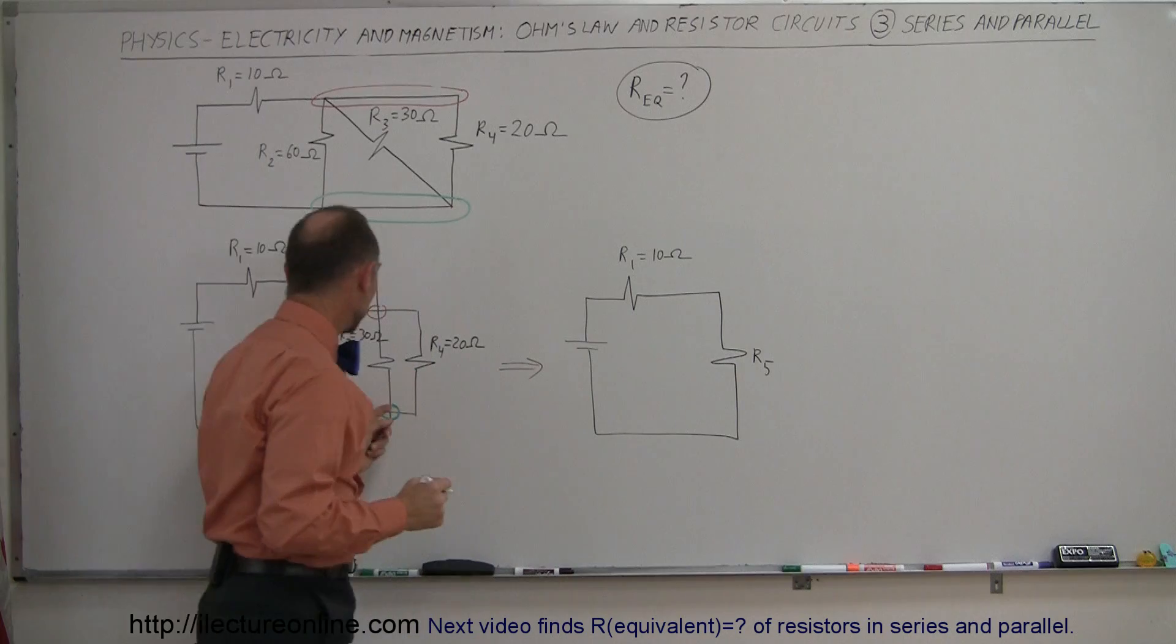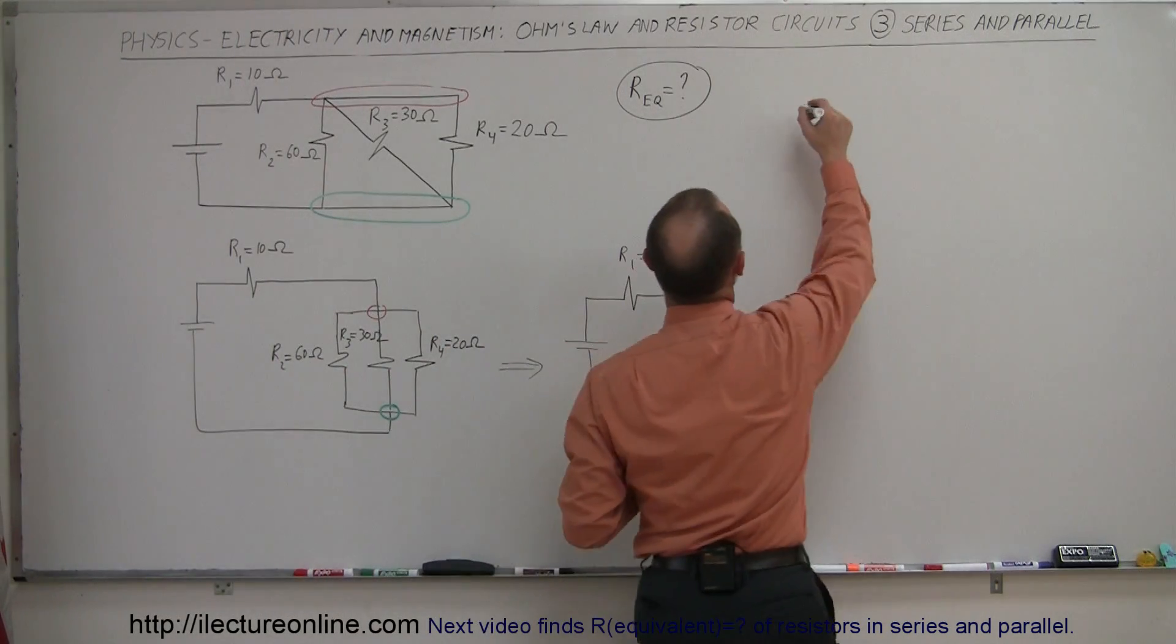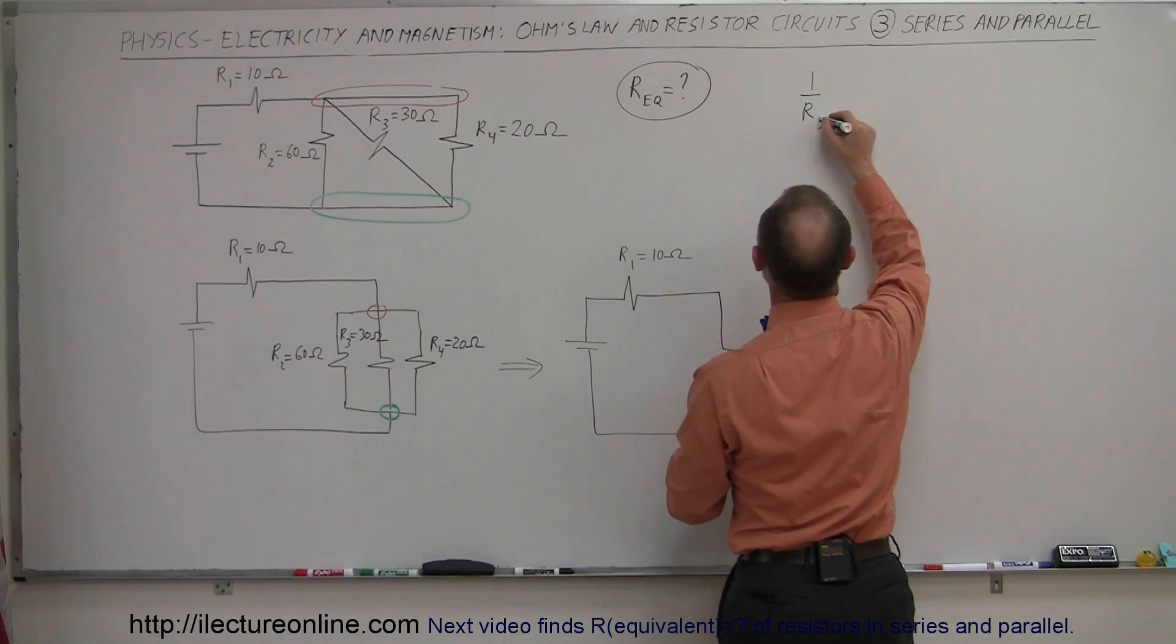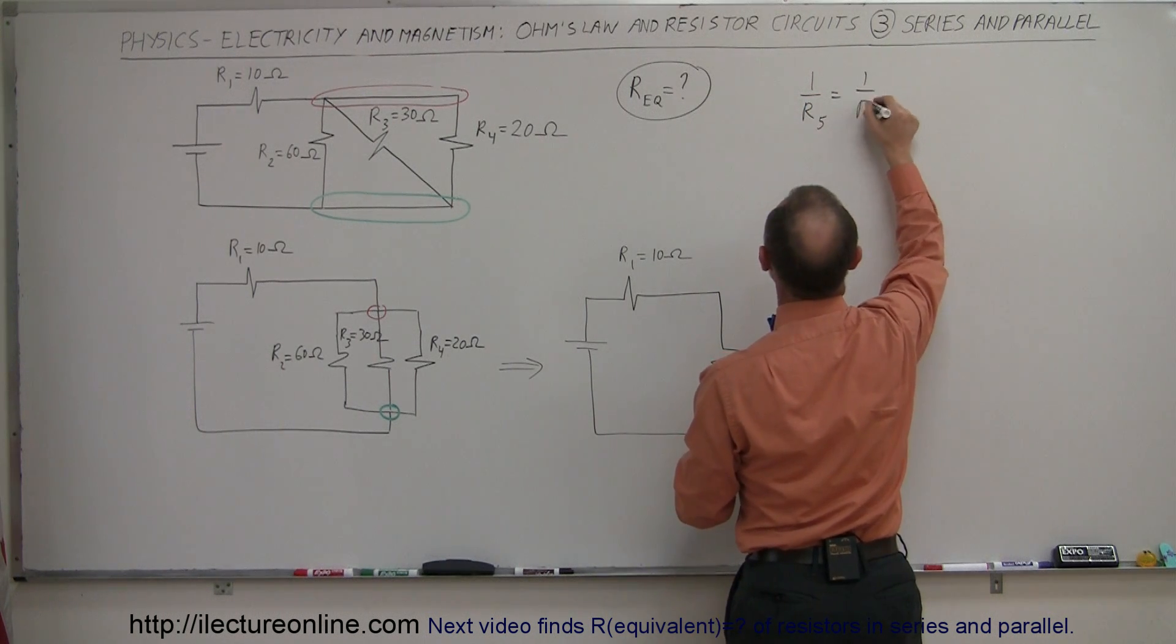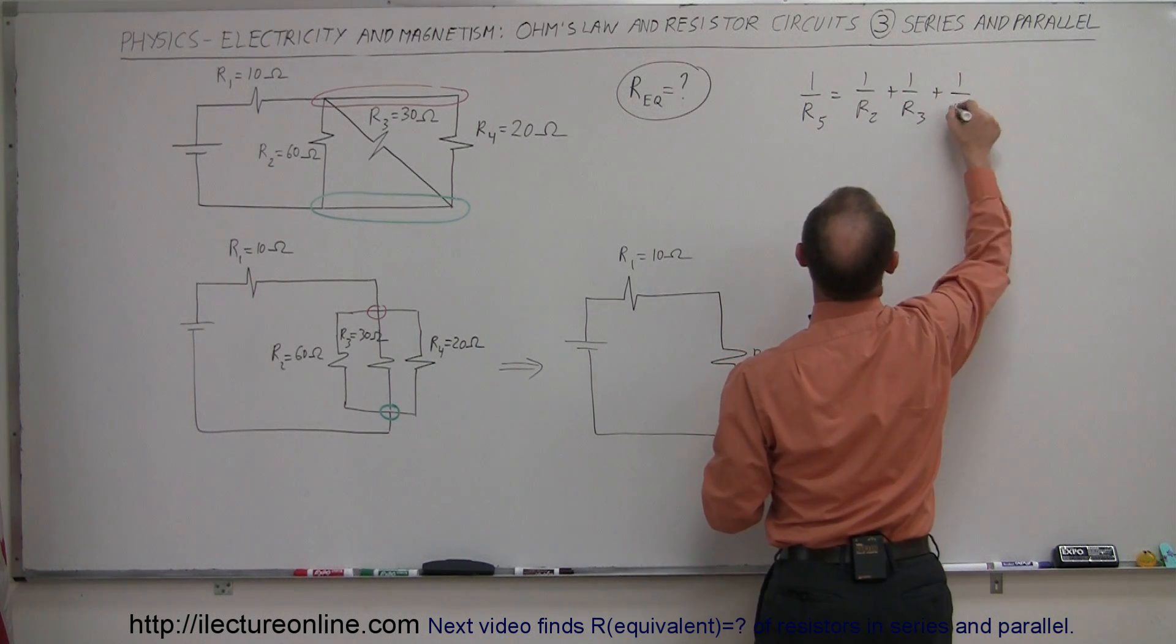And to find the equivalent resistance here, of course we use the equation we use for parallel resistors. 1 over R equivalent, in this case 1 over R5, equals 1 over R2, plus 1 over R3, plus 1 over R4.